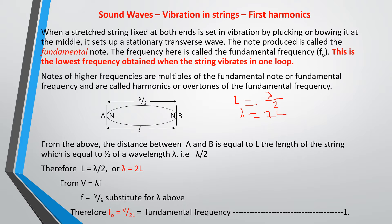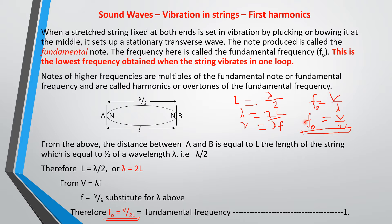From the wave equation where velocity V equals lambda times f, and f equals V over lambda, substituting gives us f₀ equals V over 2L. This is the fundamental frequency, and it is also the first harmonic for a vibrating string. We will now look at the higher frequencies that can be obtained when a string vibrates in two loops, three loops, or four loops.